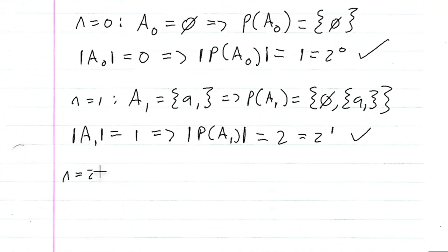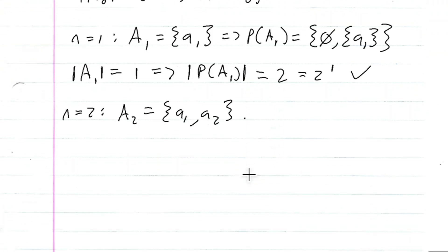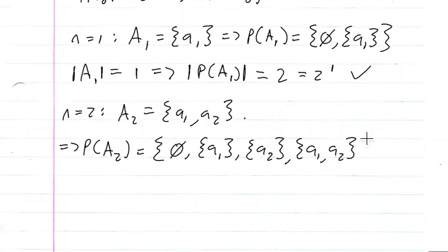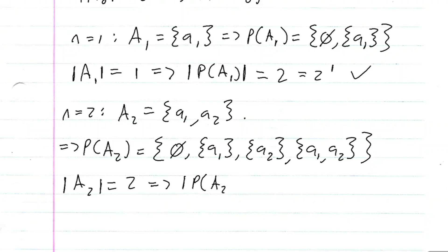Now let's try N equal to two. We'll let A sub two equal the set containing A sub one and A sub two. This implies that the power set of A sub two is equal to: using A sub one, we have the empty set and the set containing A sub one, and now we do union with the new element. So the empty set union A sub two is just A sub two, and A sub one union A sub two gives us the set containing A sub one and A sub two. We have the cardinality of A sub two is equal to two, and this implies that the cardinality of the power set of A sub two is equal to four, which is two squared.